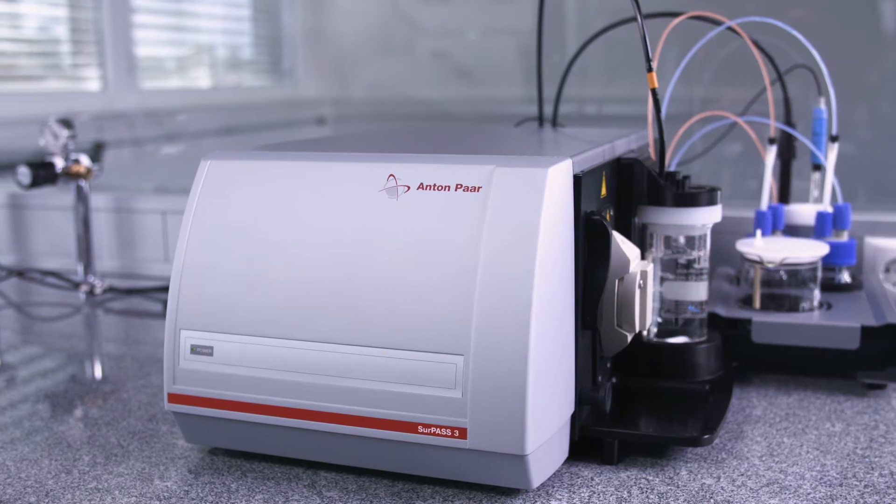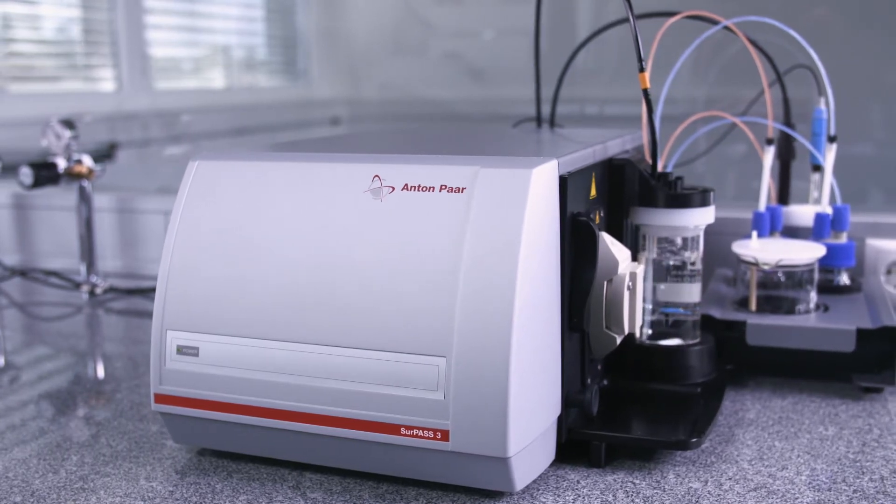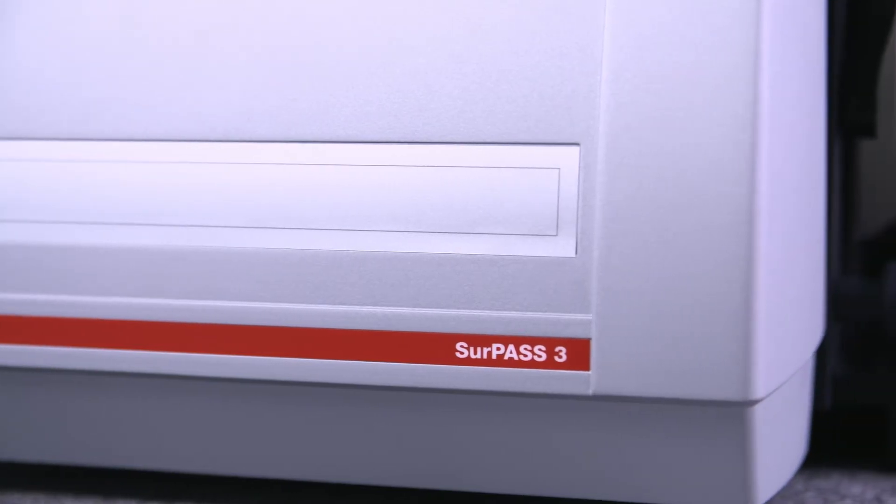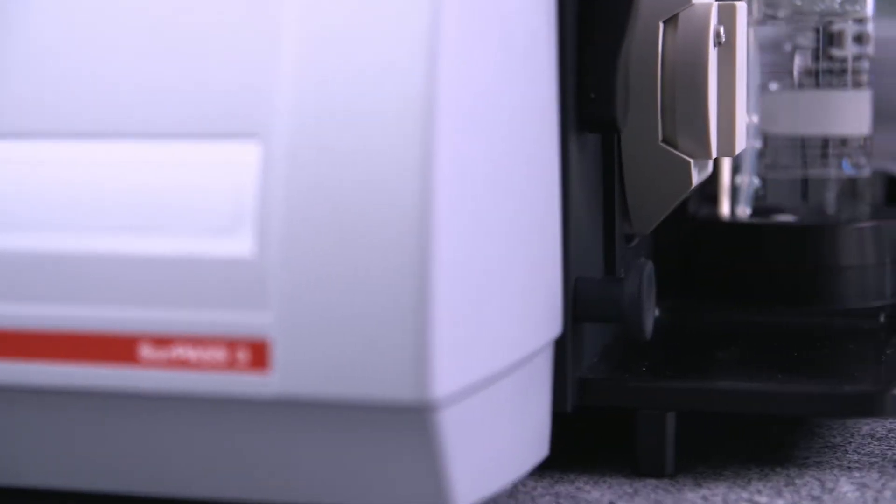Anton Parr's Surpass 3 is a high-end electrokinetic analyzer for solid surfaces that helps you understand and improve surface properties and develop new specialized materials.